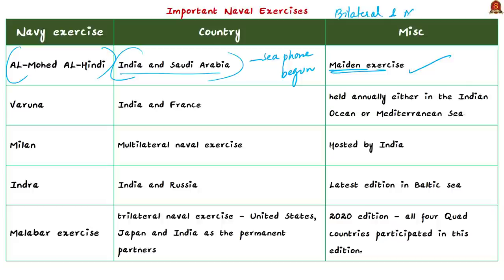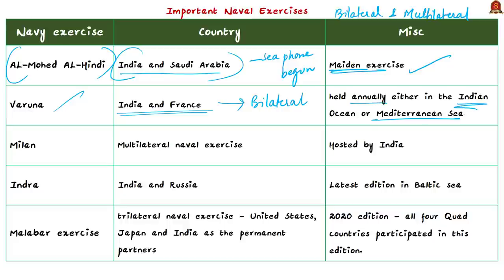Naval exercises can be bilateral (between two countries) or multilateral (between more than two countries). Varuna is a bilateral naval exercise between India and France, forming an integral part of the France-India strategic relationship. It is held annually, either in the Indian Ocean or the Mediterranean Sea. The 19th edition, called Varuna 2021, was concluded in April 2021.